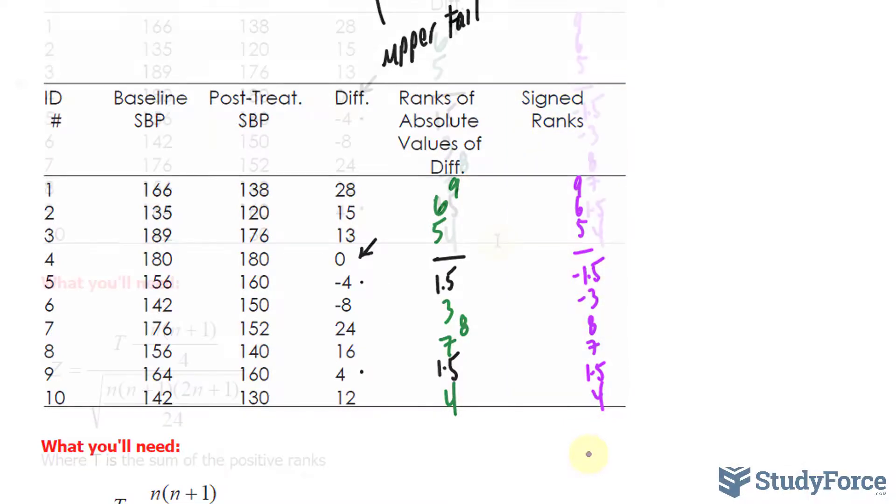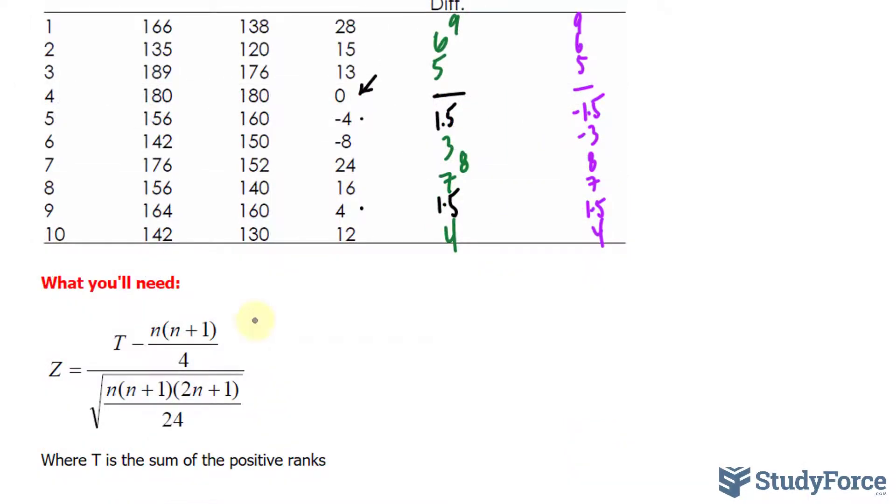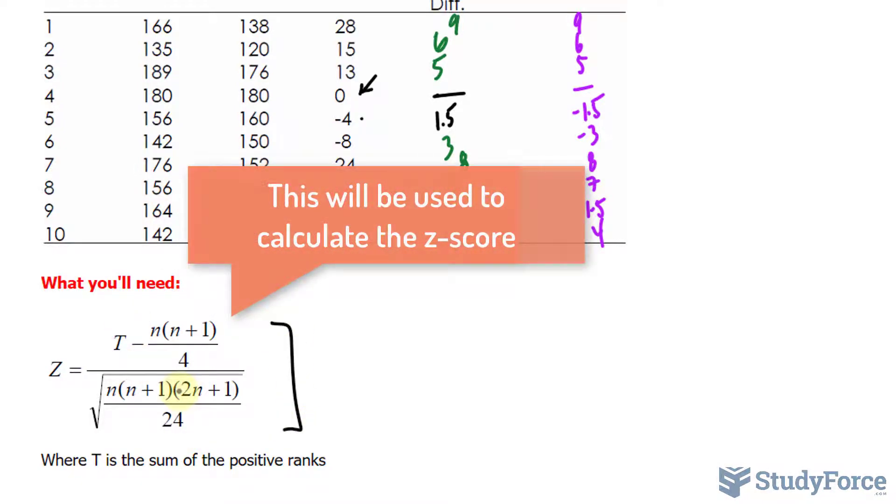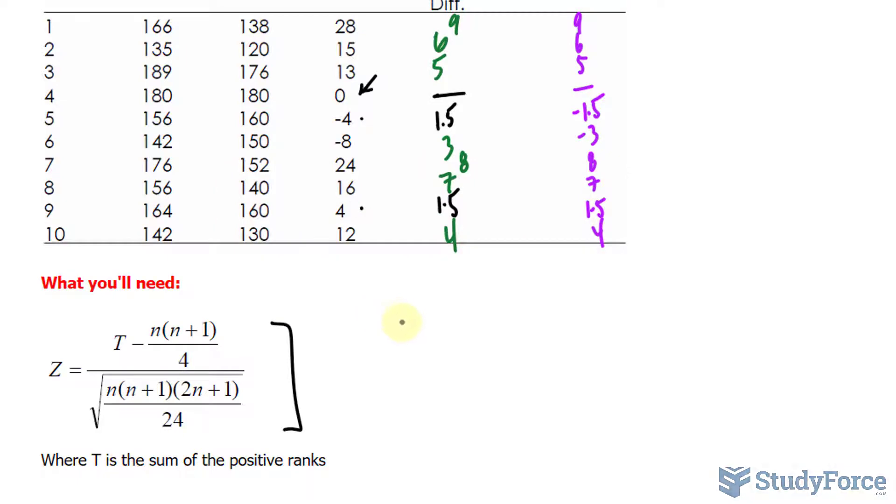The statistical test that we use is shown right here where t represents the sum of the positive ranks. Let's go ahead and find out what that is. t is equal to 9 plus 6 plus 5 plus 8 plus 7 plus 1.5 plus 4. We get a total of 40.5. n represents the maximum number in the rank of absolute differences. So, in our case, it's 9. I'll write down n is equal to 9. And now, we have everything we need to calculate z.